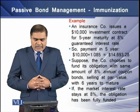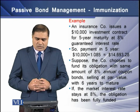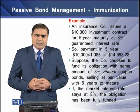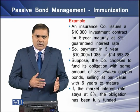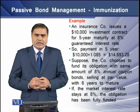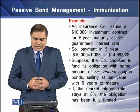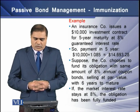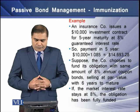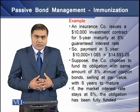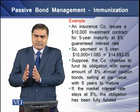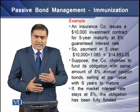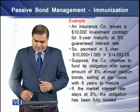To understand this, consider an example where an insurance company issues a $10,000 investment contract for 5 years maturity at an 8% guaranteed interest rate. The payment in 5 years would equal $10,000 multiplied by 1.08 to the power of 5, which comes to $14,693.28. The company chooses to fund this obligation with the same amount in an 8% annual coupon bond selling at par value with a maturity of 6 years. The obligation has a maturity of 5 years, and if the market interest rate stays at 8%, the obligation has been fully funded.